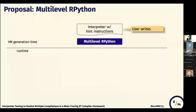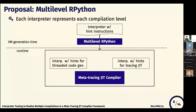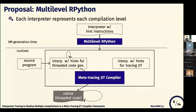Next, we show the system overview of multi-level compilation, which supports multiple compilation in RPython. The interpreter is written by the user and hint-instructions are inserted. Then, the RPython module generates a virtual machine from the written interpreter. Two interpreters are generated: one for threaded code generation, which is lightweight compilation, and the other is an interpreter used for tracing JIT compilation. When the program is first loaded to the VM, it is interpreted on the interpreter for threaded code generation.